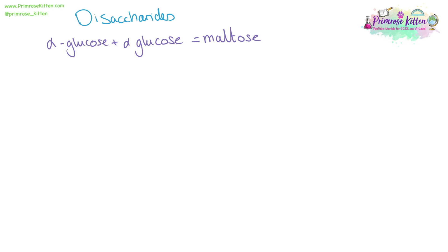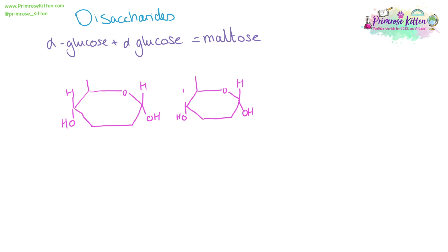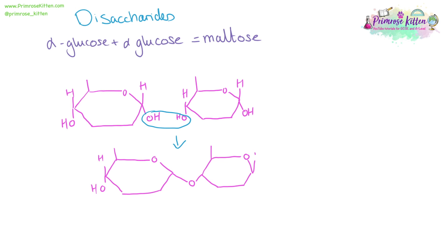When two monosaccharides of alpha glucose combine, we end up with maltose. The bond is made here, forming a glycosidic bond to give us a disaccharide of maltose. You'll see it drawn in two slightly different ways — in blue here — and while for chemistry they mean different things, for biology they mean the same thing.